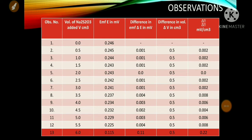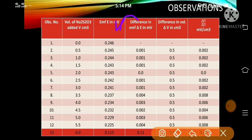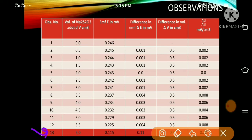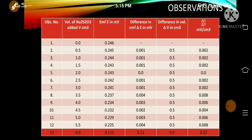Observations are recorded in the EMF column by adding 0.5 cm³ increments of the titrant. The difference in EMF can be calculated as delta E, and the difference in volume can be calculated as delta V. Delta E divided by delta V provides the values for the table. A sharp increase is observed at the equivalence point in the last section, and two or five more readings are carried out further.